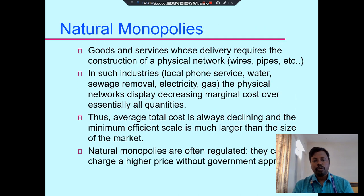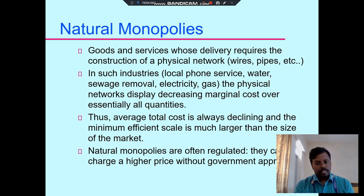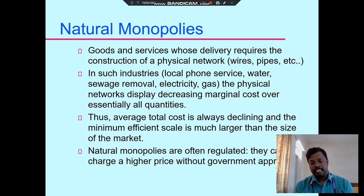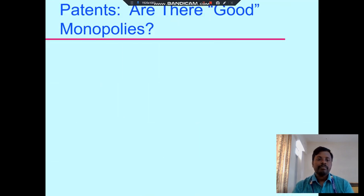The nature of monopoly is that goods and service delivery requires a constant physical network — wires, pipes, etc. Examples include local phone service, water, sewage removal, electricity, and gas. These industries display decreasing marginal cost, and the average total cost is always declining. The minimum efficient scale is much larger than the market size. Natural monopolies are often regulated and cannot charge higher prices without government approval.